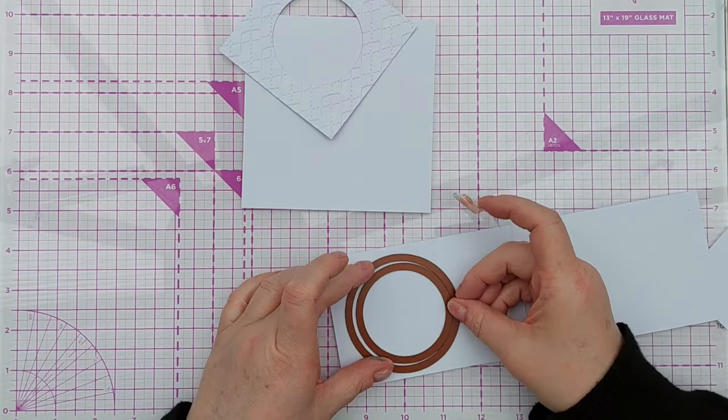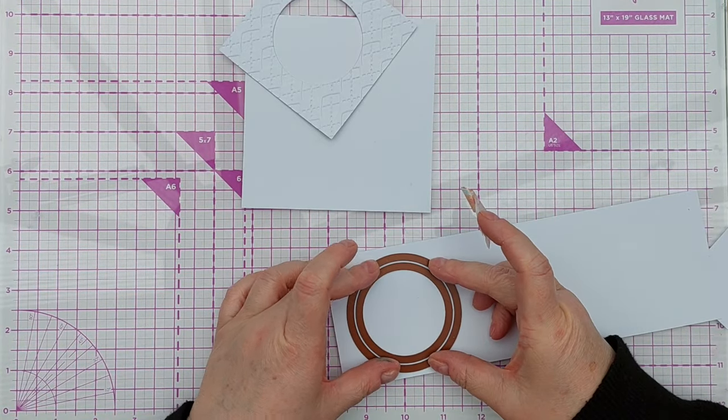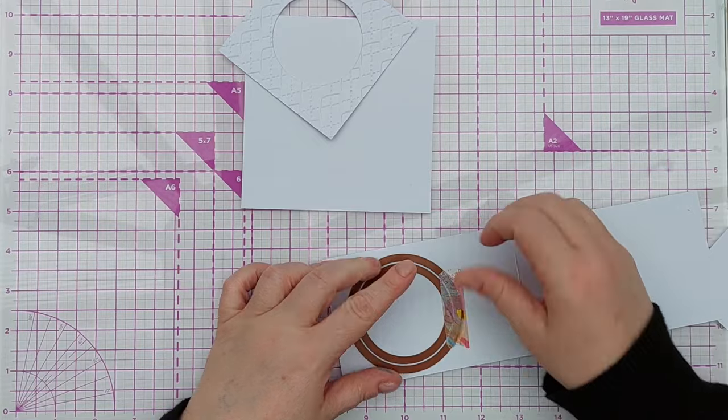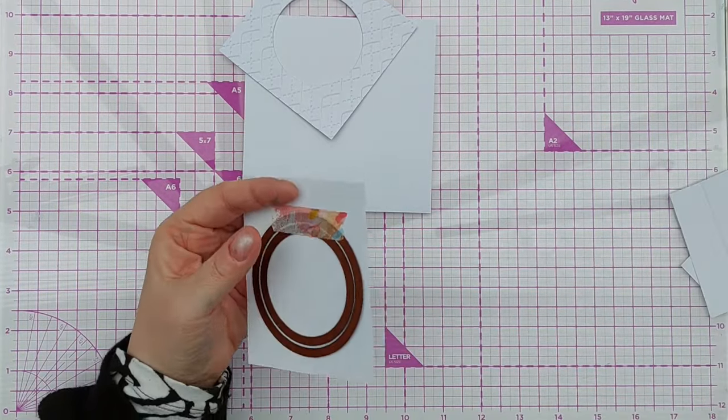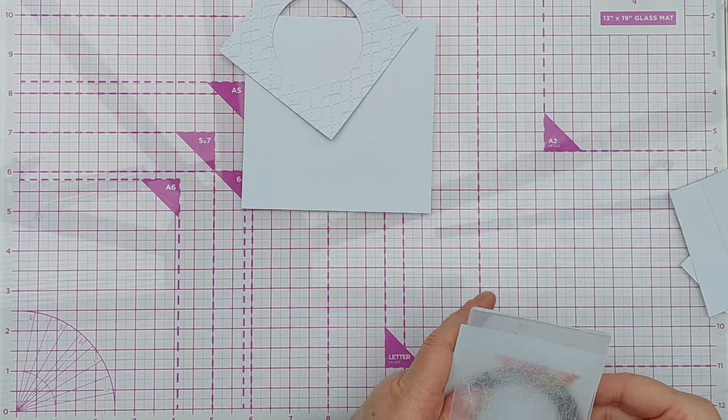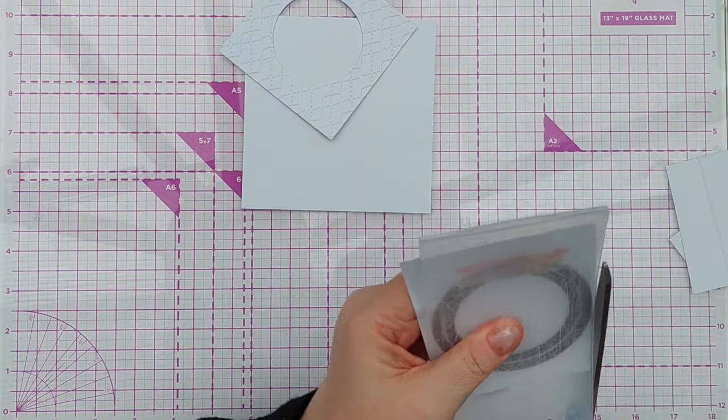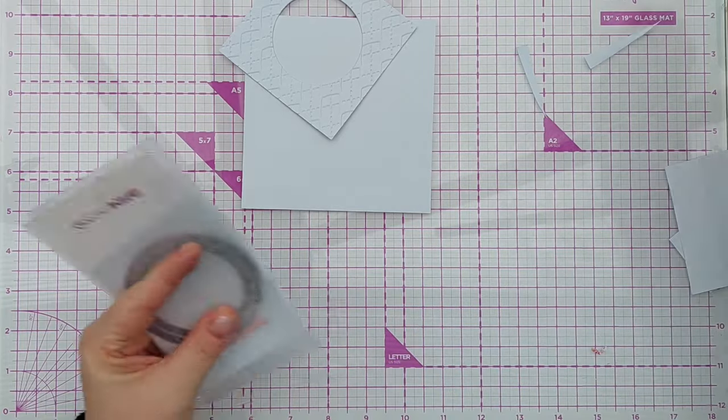Next I die cut a circle frame using the die I used for the aperture and the next size up die. All I did was line them up so that there was an equal size gap between the two dies all the way around, taped them down and then ran them through my mini Gemini.